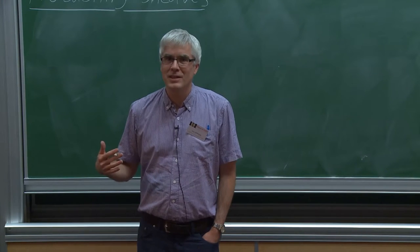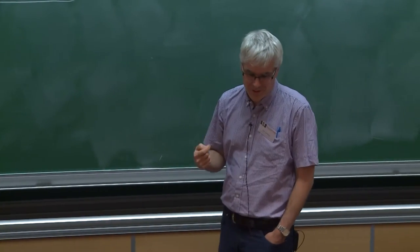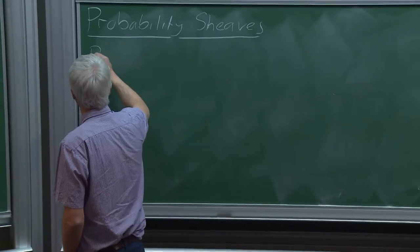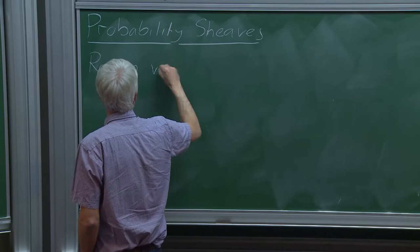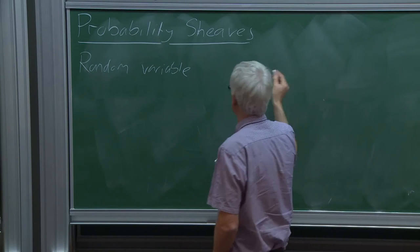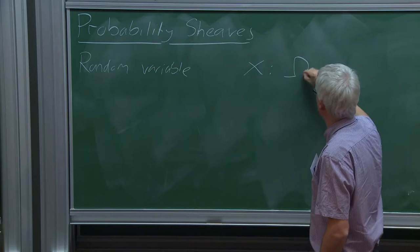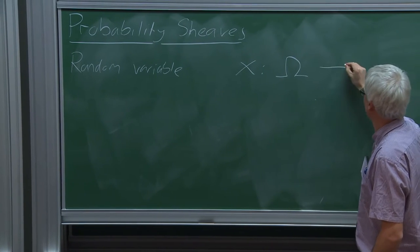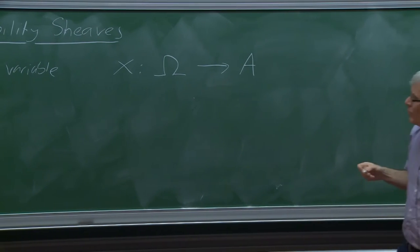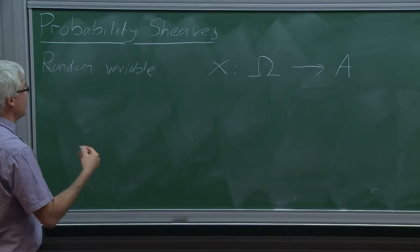Probability theory is one of the areas of mathematics that has been little touched upon this week — we've had connections with many areas of mathematics but not so much with probability theory. So I'm going to remind you what a random variable is: it's simply a map X from a sample space Ω to some nice space of values A, where for my talk I'm going to look at well-behaved random variables.